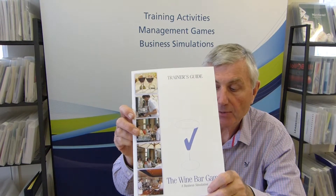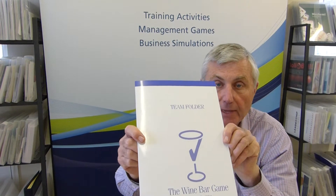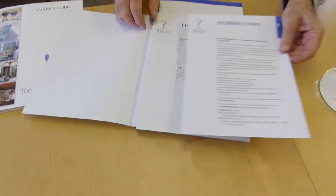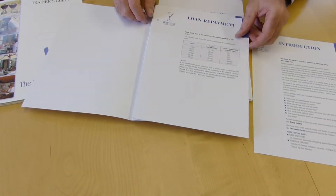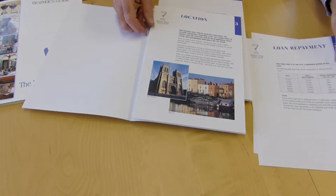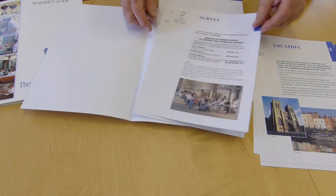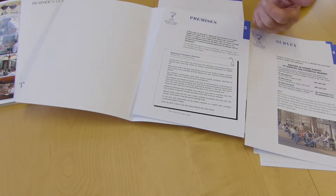This is the Wine Bar Game, which is a business simulation for one, two, three or four teams. It's fairly flexible, and each team will be running a wine bar. Each team gets a team folder, and in the team folder in loose-leaf format are all the details they need to know about their business, how they're going to manage the money, where it's located, and there's a survey of the town that's involved.